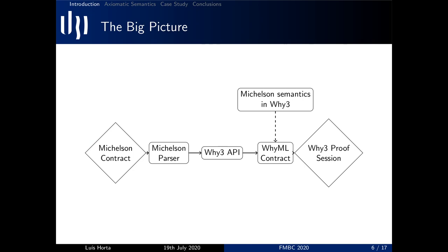In this picture you can see a representation of the architecture of Wilson. So we start with a Michelson written contract which is then parsed and the Why3 API alongside the axiomatic semantics produces a YML contract which can then be proved inside the Why3 framework.